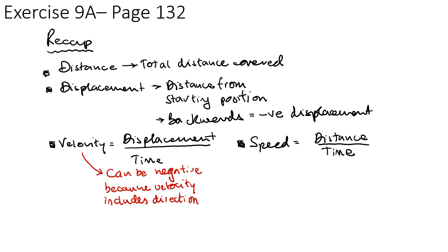Velocity is what we call a vector quantity — vector quantities include direction. Speed is a scalar quantity, so it's just a number and doesn't tell you anything about the direction.